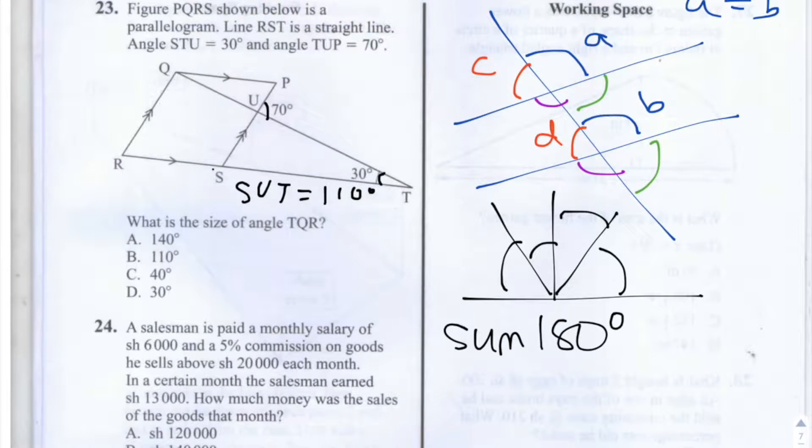I'll mark that like so. SUT is 110 degrees, and I'll do that again when it's a bit neater so you can see it better.